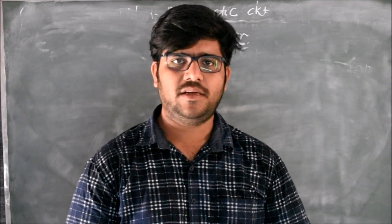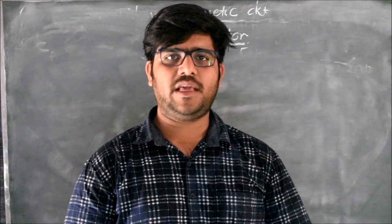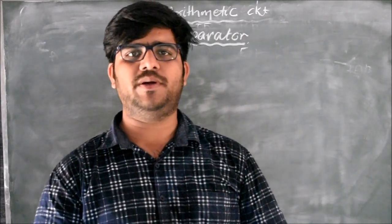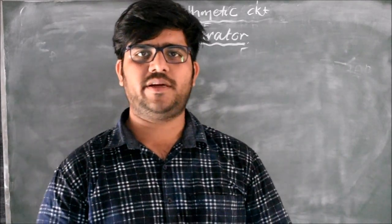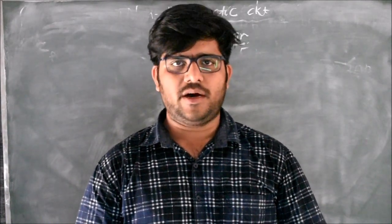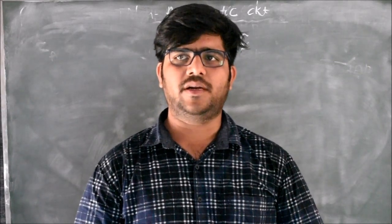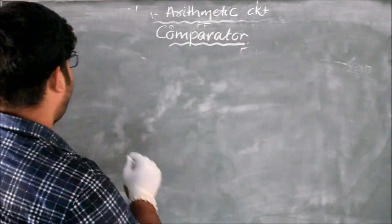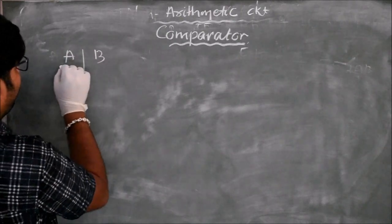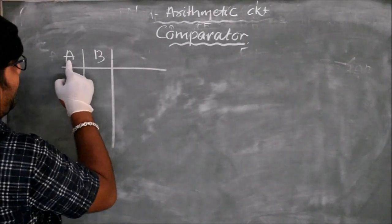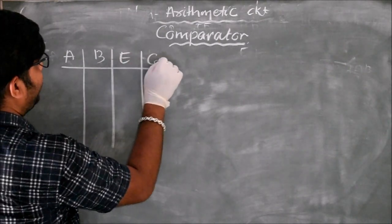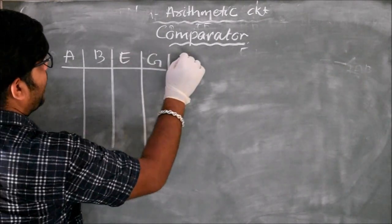Welcome to Spark Study. We will study the magnitude comparator — comparing the magnitude between two different bits. We compare whether they are equal, or the first one is greater than the second, or the second is greater than the first. If we take two bits A and B, we can have three possibilities: A equals B, A greater than B, or A less than B.